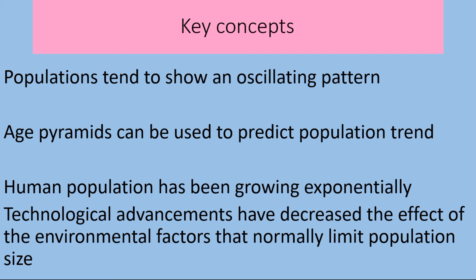In today's lesson, we learned that populations tend to show an oscillating pattern of increase followed by decrease followed by increase again, normally brought about by environmental factors such as competition for food. Age pyramids can be used to predict population trends, and the human population has been growing exponentially due to technological advancements that have decreased the effect of environmental factors that would normally limit our population size. Thank you for watching — remember to hit the like and subscribe button and be the first to know when our next video airs. See you soon!